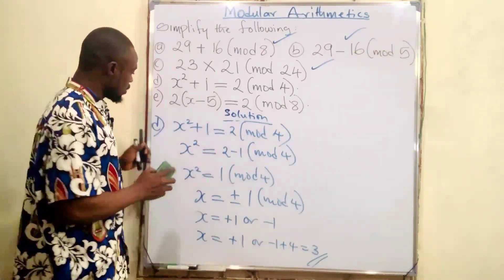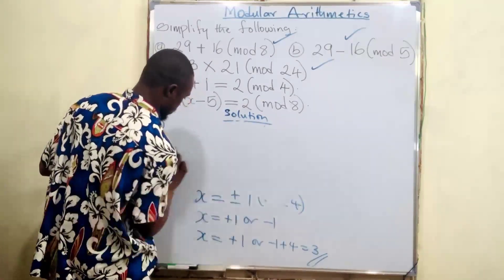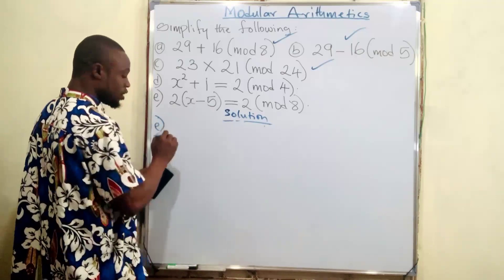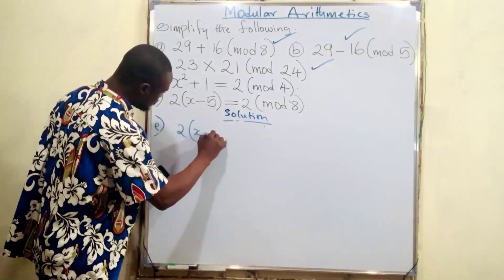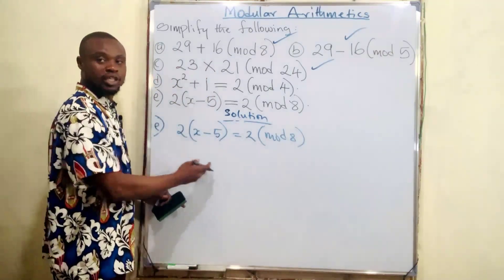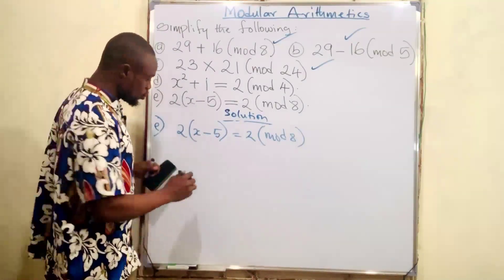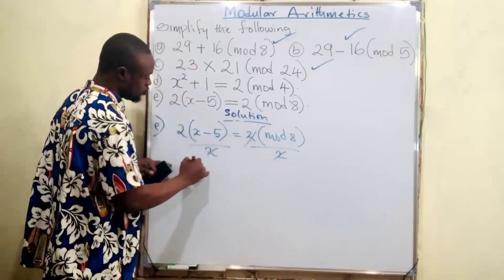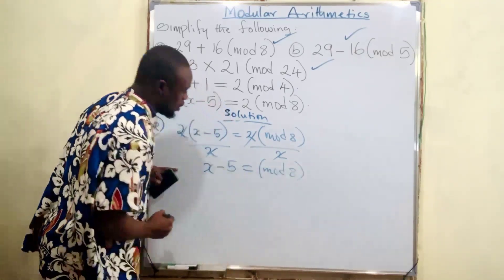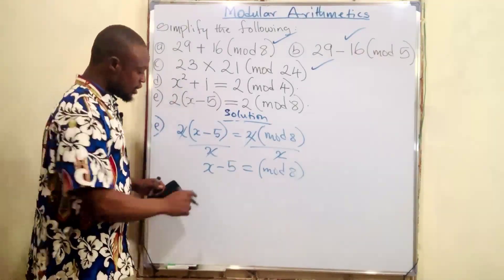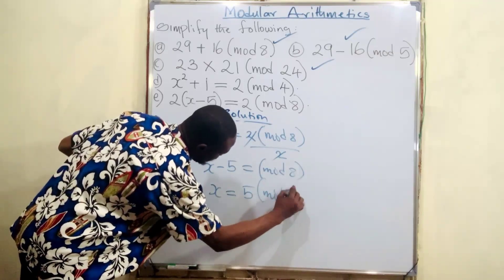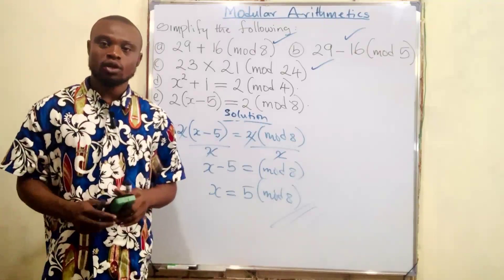The last question: 2 times open bracket x minus 5, equals 2, all in mode 8. Since we have a 2 on both sides, we divide both sides by 2 — the twos cancel out. We are left with x minus 5 equals 1 in mode 8. Moving minus 5 to the right-hand side makes it plus 5, so x equals 1 plus 5, which gives x equals 6 in mode 8. Thank you for watching.